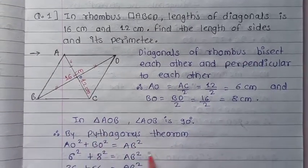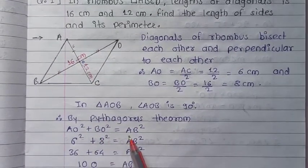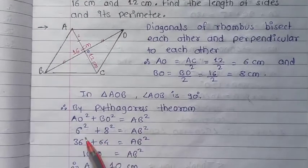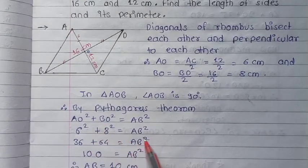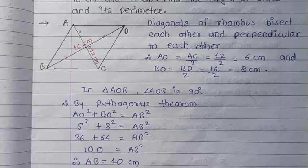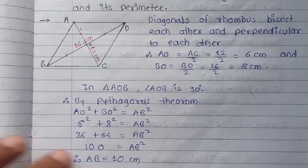By the Pythagoras theorem: AO squared plus BO squared equals AB squared. So 6 squared plus 8 squared equals AB squared — that is 36 plus 64 equals 100. Therefore AB is equal to 10 centimeters.